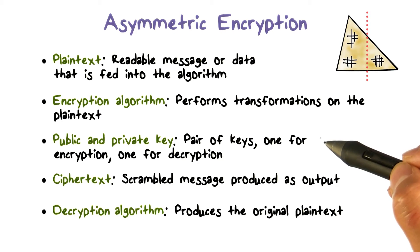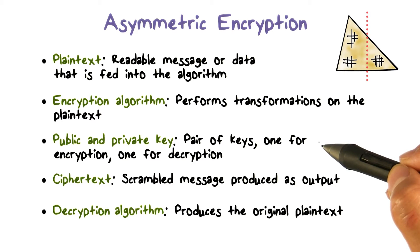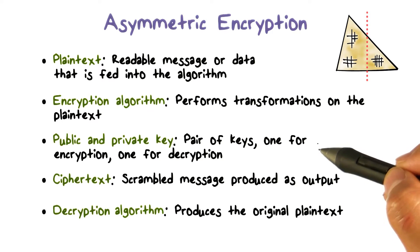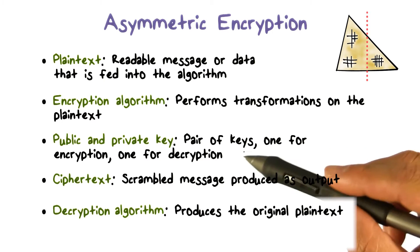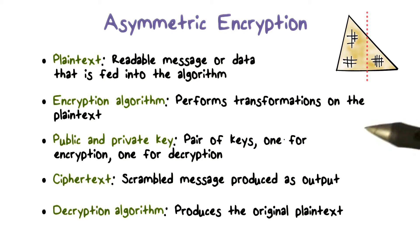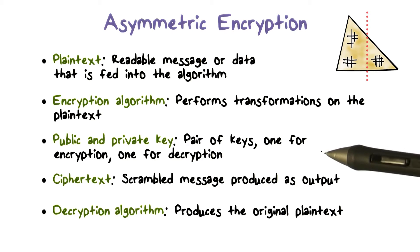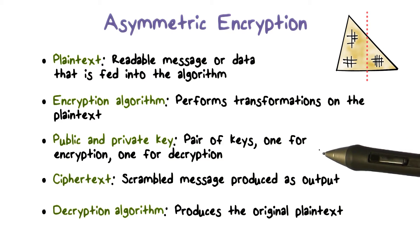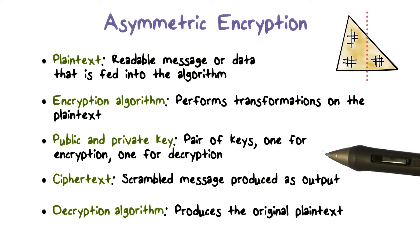Instead of using a single key as in symmetric encryption, asymmetric encryption uses a pair of keys. One is used for encryption and the other is used for decryption, and the two keys are paired mathematically together.